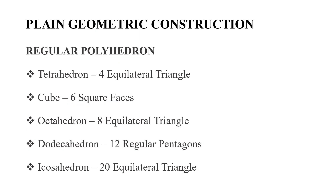Moving to plane geometry construction: a regular polyhedron is a regular solid. The types include: a tetrahedron with four equilateral triangular faces, a cube with six square faces, an octahedron with eight equilateral triangular faces, a dodecahedron with 12 regular pentagonal faces, and an icosahedron with 20 equilateral triangular faces.